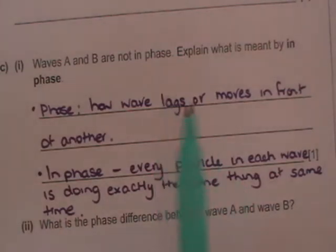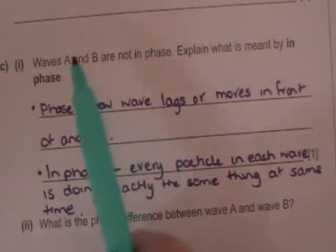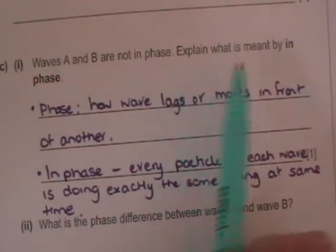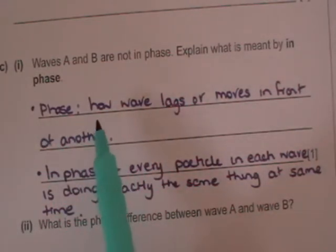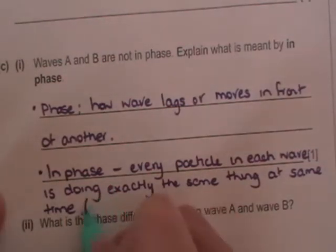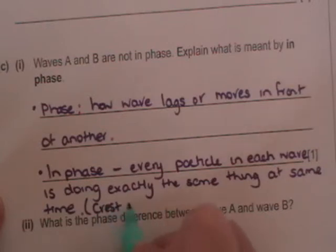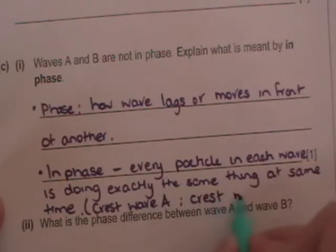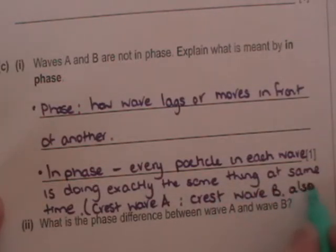So I'm not just sure of what that question is asking or what they're asking for there. I think the question is really asking what does in phase mean? And that means that the two waves are doing exactly the same thing at the same time. And if you thought your answer wasn't that clear you could say then when there's a crest wave A, then there's a crest wave B also or something. And try and clarify your answer a little bit better.